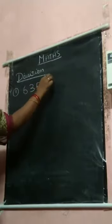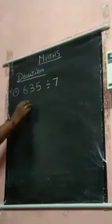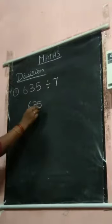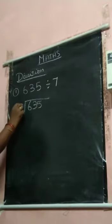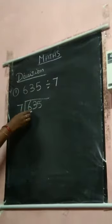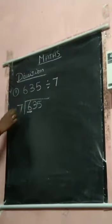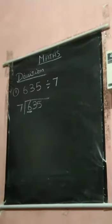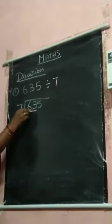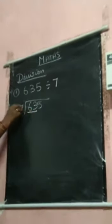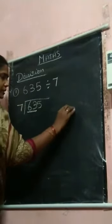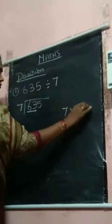635 divide by 7. First you take the first digit. 6 is smaller than 7, so you take 2 digits. If you are taking 2 digits, you start the multiplication from 5.